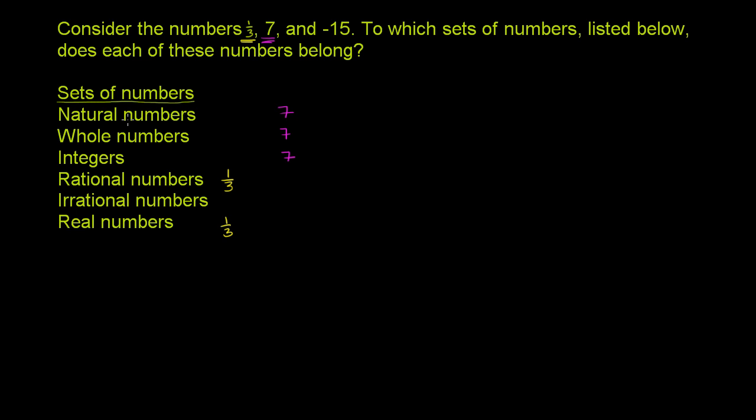Anything that is a natural number or a whole number or an integer is also going to be a rational number. Because you can represent this as 7 over 1. 7 is equal to 7 over 1. And you can do this with any integer. You can just say it's the same thing as that over 1. So you can represent it as a fraction.